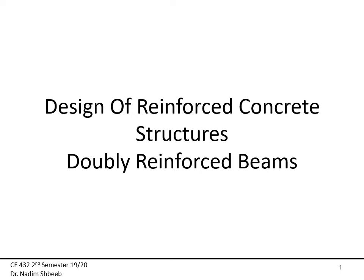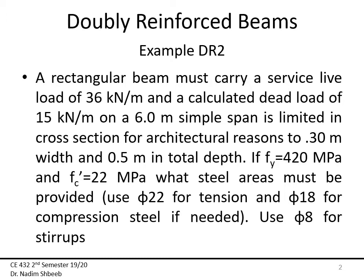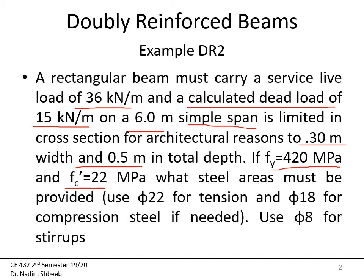Asalaamu Alaikum, how are you doing? In this recording, we're going to show the design of a doubly reinforced rectangular concrete beam. We have a rectangular beam that must carry a service live load of 36 kN/m and a calculated dead load of 15 kN/m on a 6-meter simple span, limited to 300 mm width and 500 mm total depth. Fy is 420 MPa, F'c is 22 MPa. Use φ22 for tension and φ18 for compression steel if needed, and φ8 for stirrups.